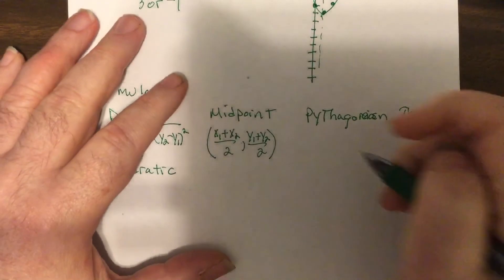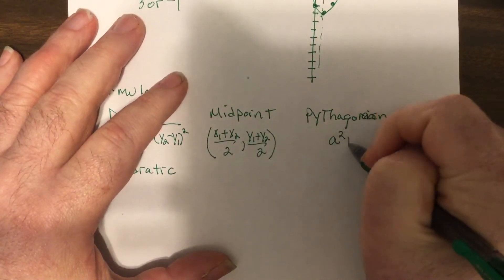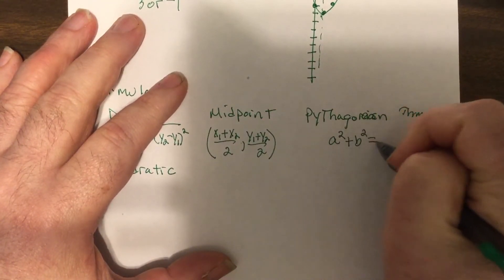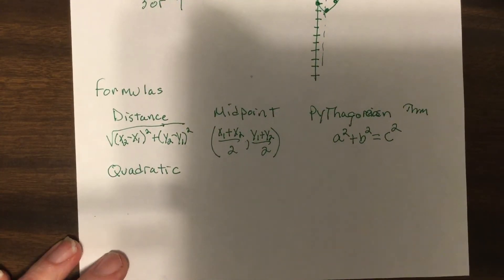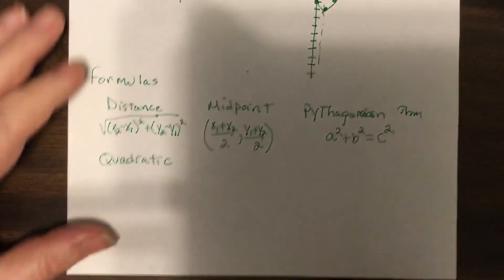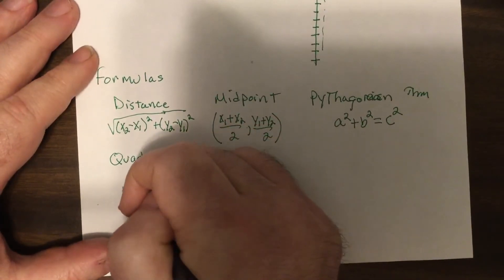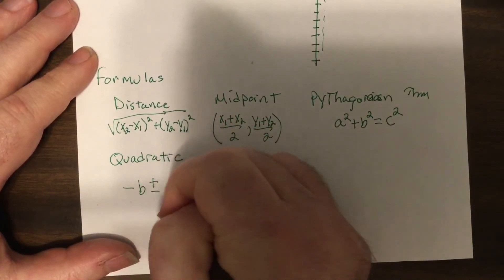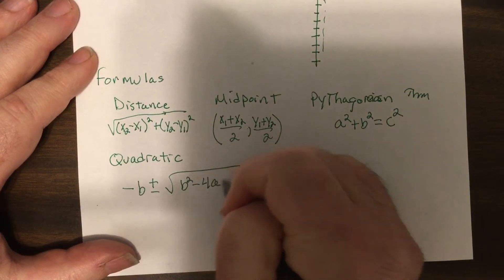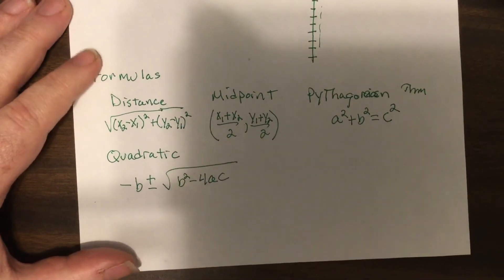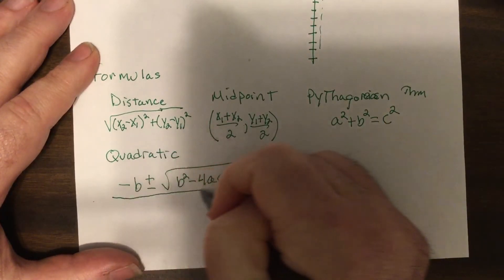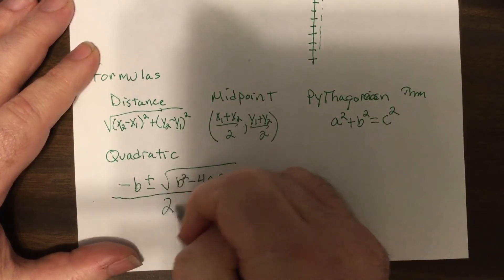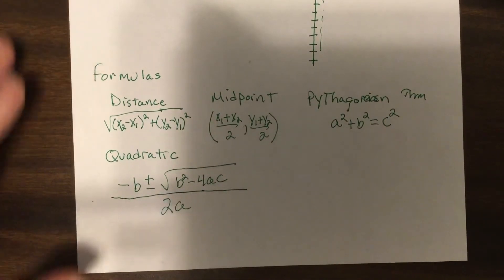Pythagorean: a squared plus b squared equals c squared. Most people know that one. And the quadratic formula: negative b plus or minus the square root of b squared minus four ac. Now here's where you gotta be careful, my honors made this mistake a week ago. It's all over two a. The division has to go all the way across or it's wrong.